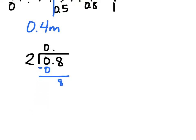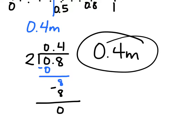In step 2, we're going to divide the tenths by 2. 2 goes into 8 four times, so we'll place a 4 here right above the tenths. Now we solve: 4 times 2 is 8. Subtract that away, we get 0, so we are finished. Each piece of ribbon is 0.4 meters in length.